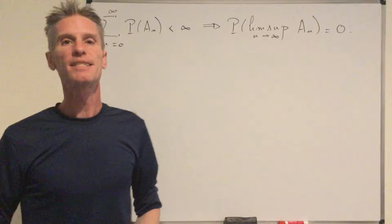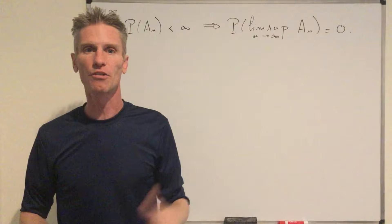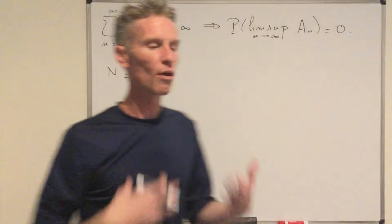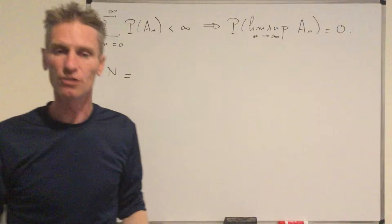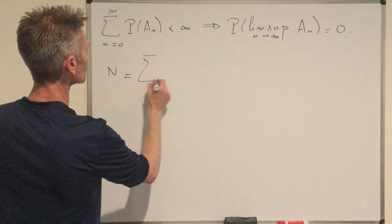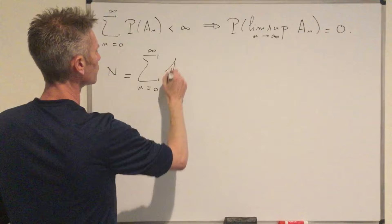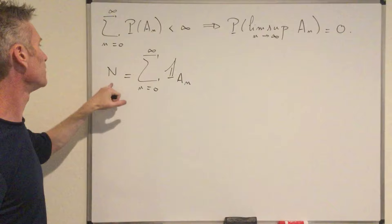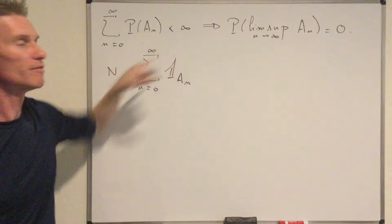To prove this, the proof is not very difficult. It's based on a basic application of the monotone convergence. The idea is to introduce a new random variable N. N is some kind of counting variable that is going to keep track of the number of those events A_n that are going to occur. So N is just the infinite sum for n = 0 to infinity of the indicator function of the event A_n. You see that if you look at the expected value of this indicator function, that just gives you P(A_n). So the expected value of N should be equal to this infinite sum. And so the expected value of N is finite — we can prove this as a consequence of the monotone convergence.